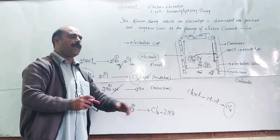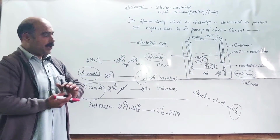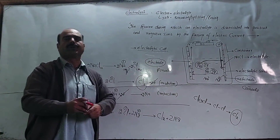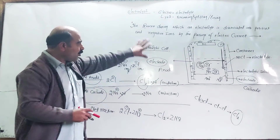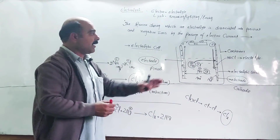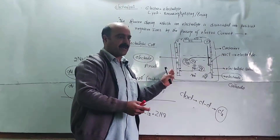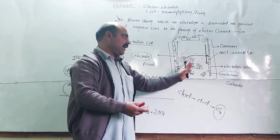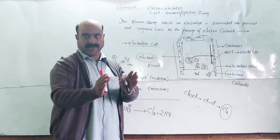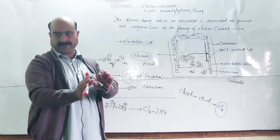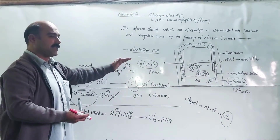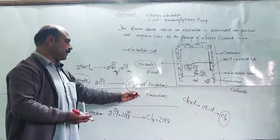Through electrolysis, we can obtain elements back from chemical compounds. This whole process by which elements are obtained from compounds by passing electric current is known as electrolysis.